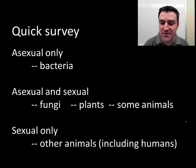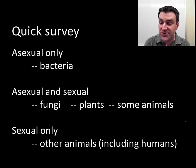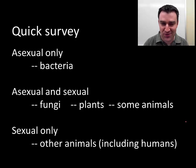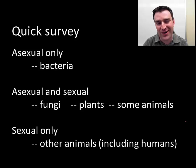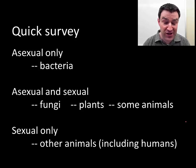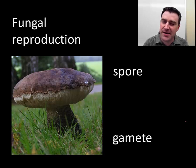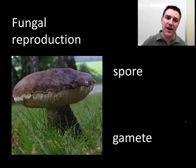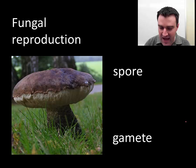Let's do a quick survey of how different organisms reproduce. Bacteria can only reproduce asexually — if they want to generate genetic variety, they'll need other mechanisms we'll explore later. Most organisms are certainly capable of reproducing sexually, and actually more organisms than us can reproduce in both modes. We humans are only capable of reproducing sexually.